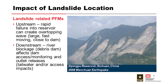This is at the Zipingpu Reservoir in Sichuan, China, 2008. If you have a landslide upstream, you can have rapid failure and create a wave — a large fast-moving wave close to the dam that overtops it. The dam can remain perfectly intact and stable, but you have a huge overtopping event, and downstream you have life loss and damage. You can also have downstream blockage and a debris dam, which affects access, monitoring, and outlet releases of the dam.